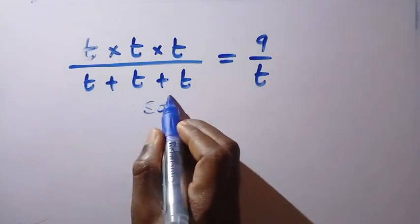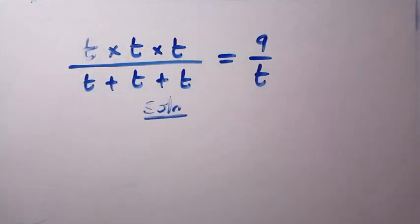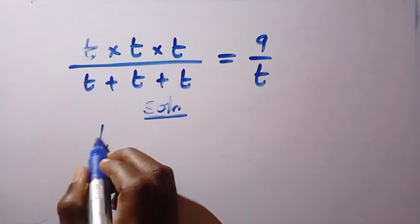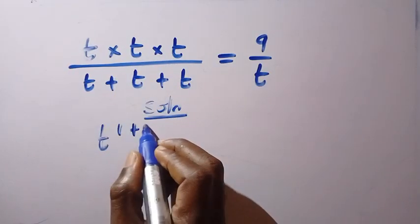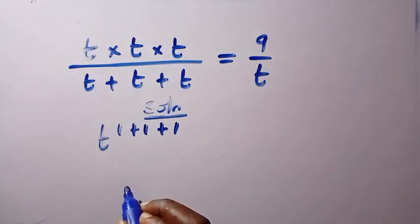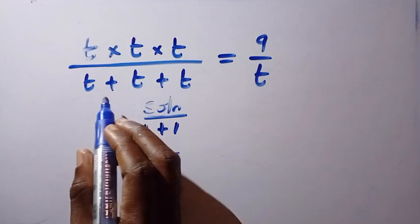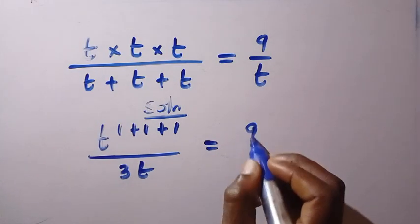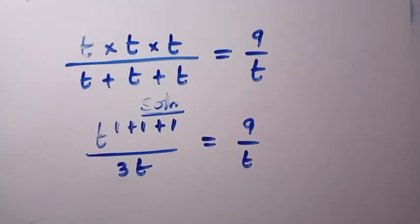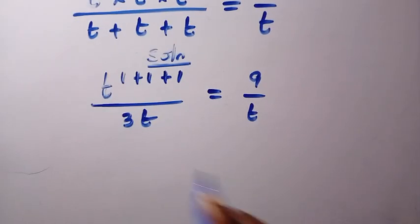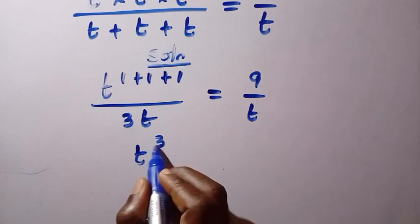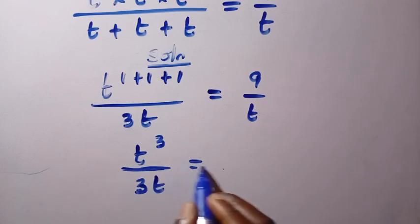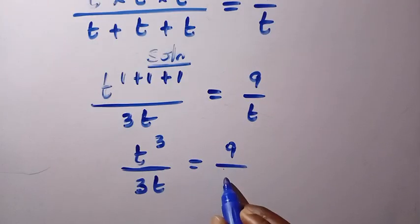Considering the solution here, by multiplying t by t by t, we are going to have t raised to the power of 1 plus 1 plus 1 according to the rule of indices. And if you add t plus t plus t, we are going to have 3t. So that gives us t raised to the power of 3 divided by 3t equals 9 divided by t.